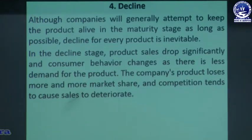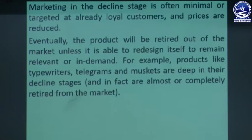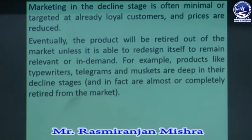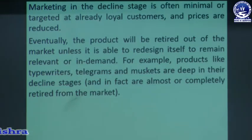The last stage is decline. Although companies will generally attempt to keep the product alive in the maturity stage as long as possible, decline of every product is inevitable. When sales drop significantly and consumer behavior changes, there is less demand for the product and the company loses more and more market share. Marketing in the declining stage is often minimal and targeted to already loyal customers, prices are reduced, and eventually the product will be retired unless it is redesigned. Examples include typewriters, telegrams, and muskets.